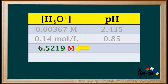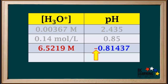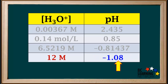This hydronium ion concentration has five significant figures, so the pH must be expressed to five decimal places. The pH is the negative log of 6.5219, which comes out to negative 0.81437, expressed to five decimal places. We can see that it is possible to have a negative value for pH; these occur with relatively high hydronium ion concentrations. The hydronium ion concentration here is 12 molar, which has two significant figures, so the pH must be expressed to two decimal places. The pH is the negative log of 12, which comes out to negative 0.08.